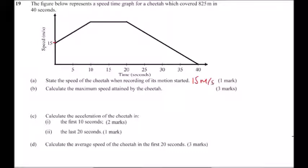Part b: calculate the maximum speed attained by the cheetah. To get the maximum speed, we use the fact that the area under the graph represents the distance covered. We can call this unknown height h. Since we already know the total area is 825, this value of 15 is known, and the base from here to here is 10.